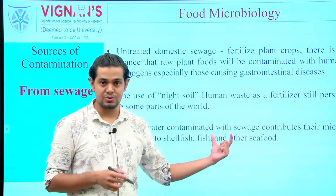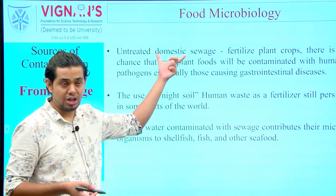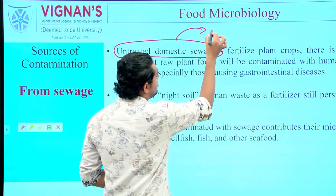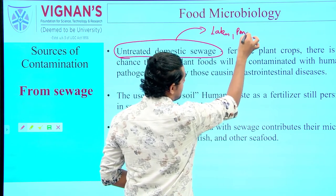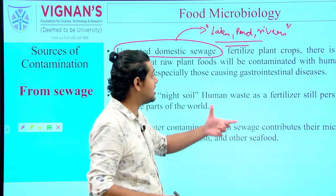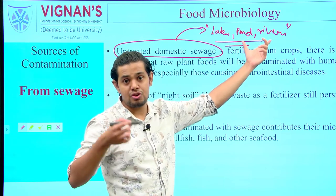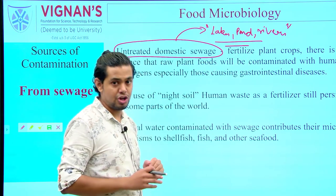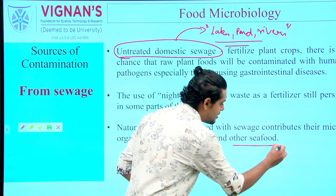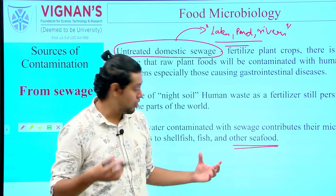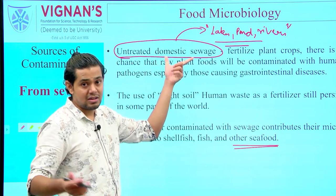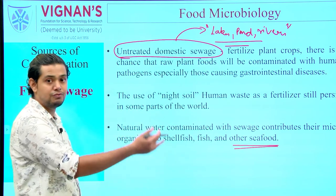Natural water bodies contaminated with untreated domestic sewage — such as lakes, ponds, and rivers — if used as sources for crop cultivation, can impart specific contamination to the food matrix. Seafoods, including shellfish and fish, will also be contaminated in such cases. It is therefore not advisable to release untreated domestic water into natural water bodies, as the entire food chain cycle becomes contaminated.